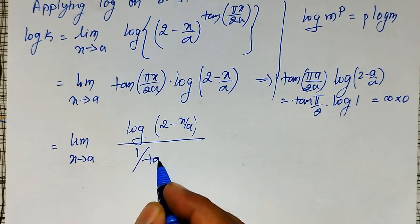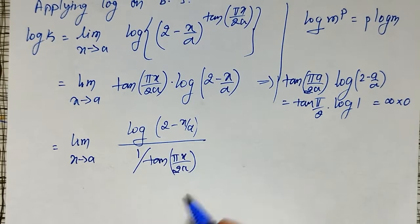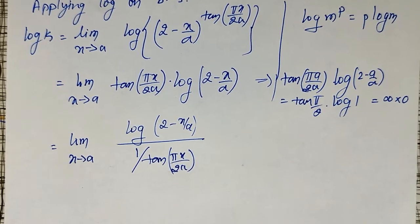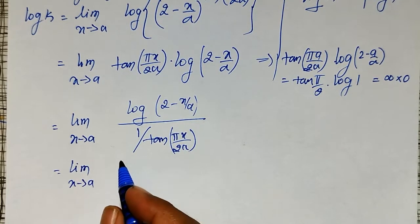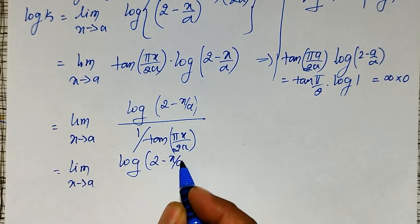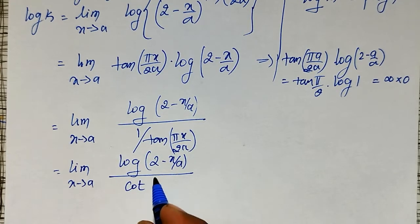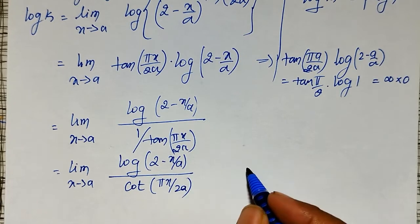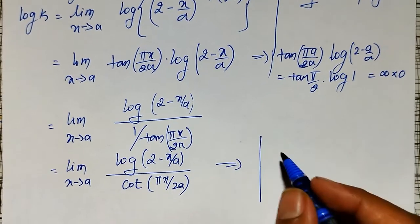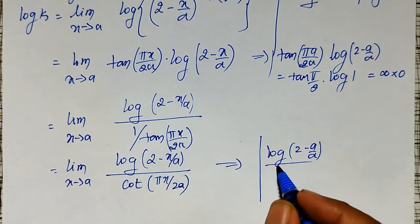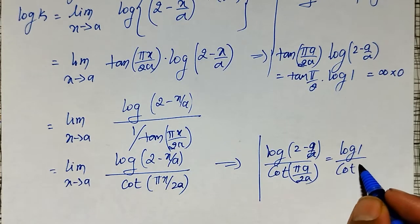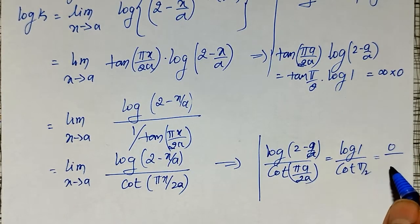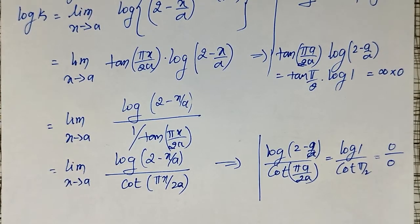Rewriting 1/tan as cot, this becomes the limit as x tends to a of log(2 minus x/a) divided by cot(πx/2a). Now checking: substituting x equal to a gives log(2 minus a/a) divided by cot(πa/2a), which is log(1) divided by cot(π/2) — that is 0 divided by 0. So now it is in the 0/0 form and we can apply L'Hôpital's rule.